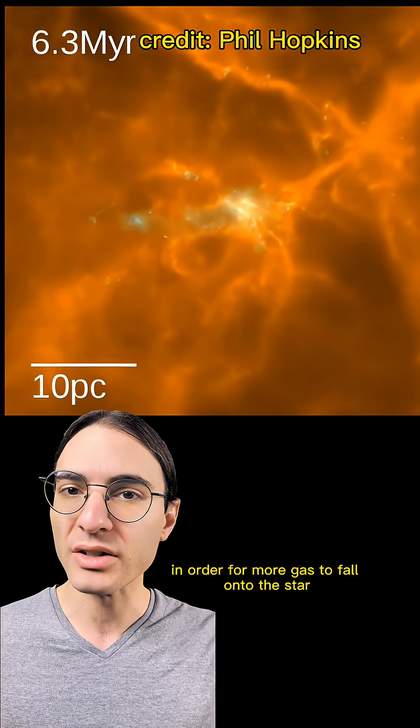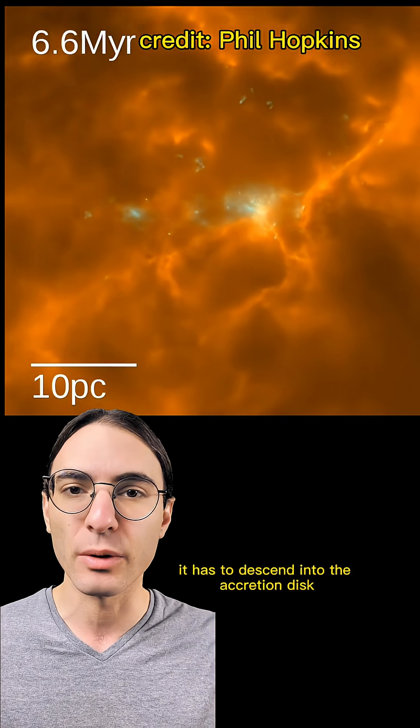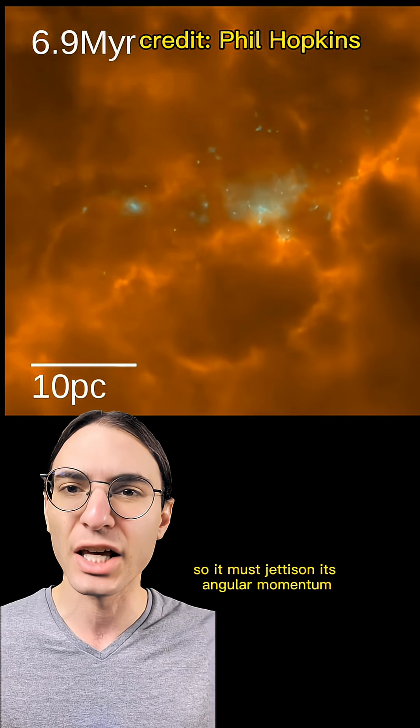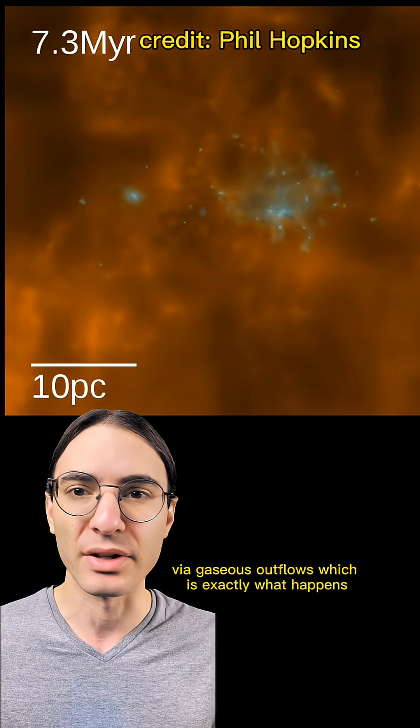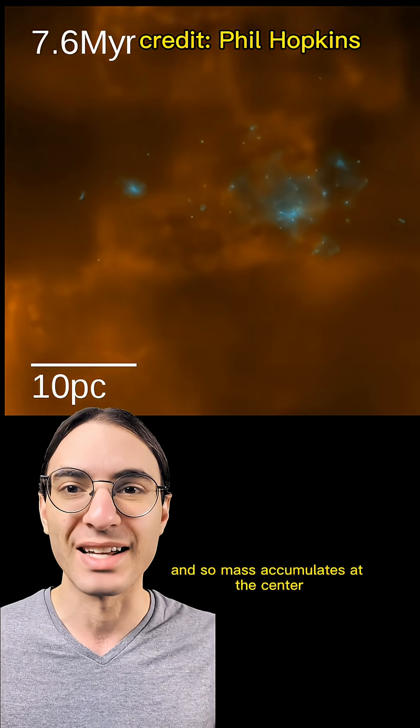In order for more gas to fall onto the star, it has to descend into the accretion disk, so it must jettison its angular momentum via gaseous outflows, which is exactly what happens. And so mass accumulates at the center.